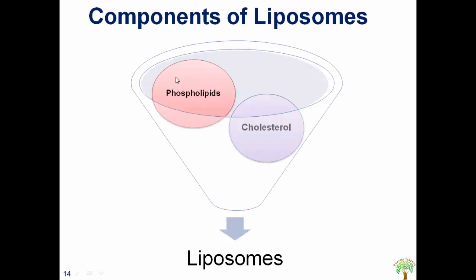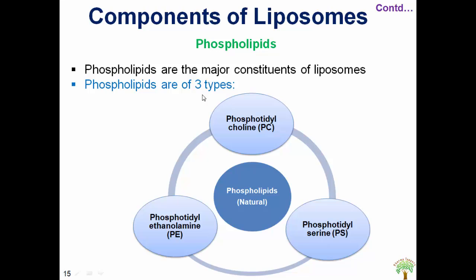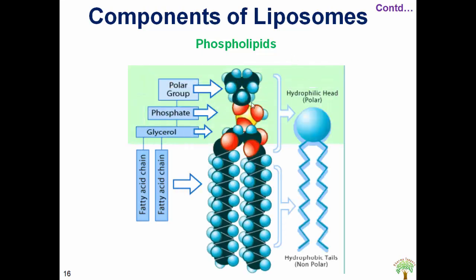Now coming to the components of liposomes. Liposomes are mainly made of phospholipid and cholesterol as two major constituents. Phospholipid is the major component which forms the bilayer. They are available in nature in three different types: phosphatidylcholine, phosphatidylethanolamine, and phosphatidylserine. The structure of a common phospholipid molecule has a polar head group — like the choline group in phosphatidylcholine — then a phosphate backbone, then a glycerol linkage. These three contribute to the hydrophilic head group. After that, it has two acyl fatty chains which contribute to the hydrophobic tail.